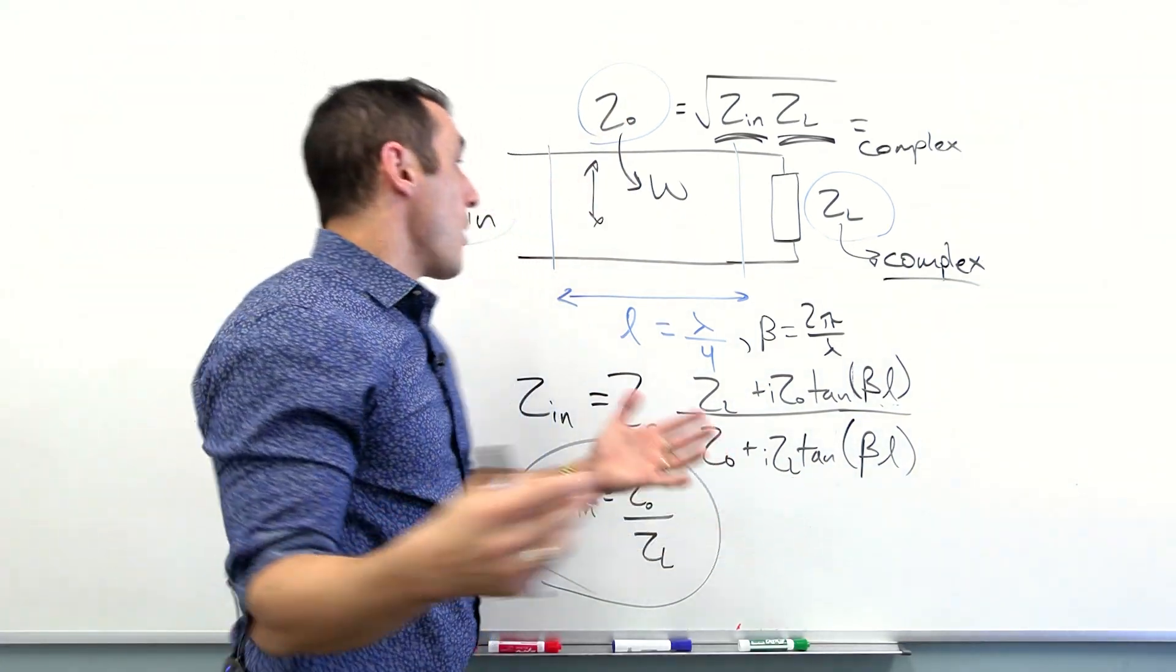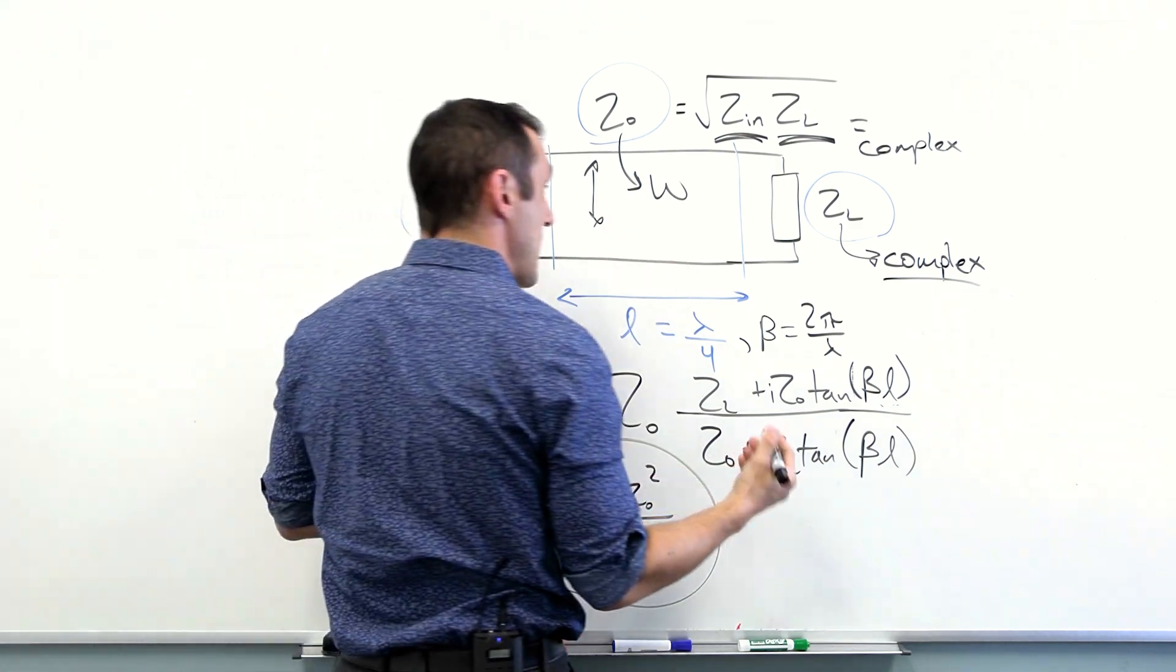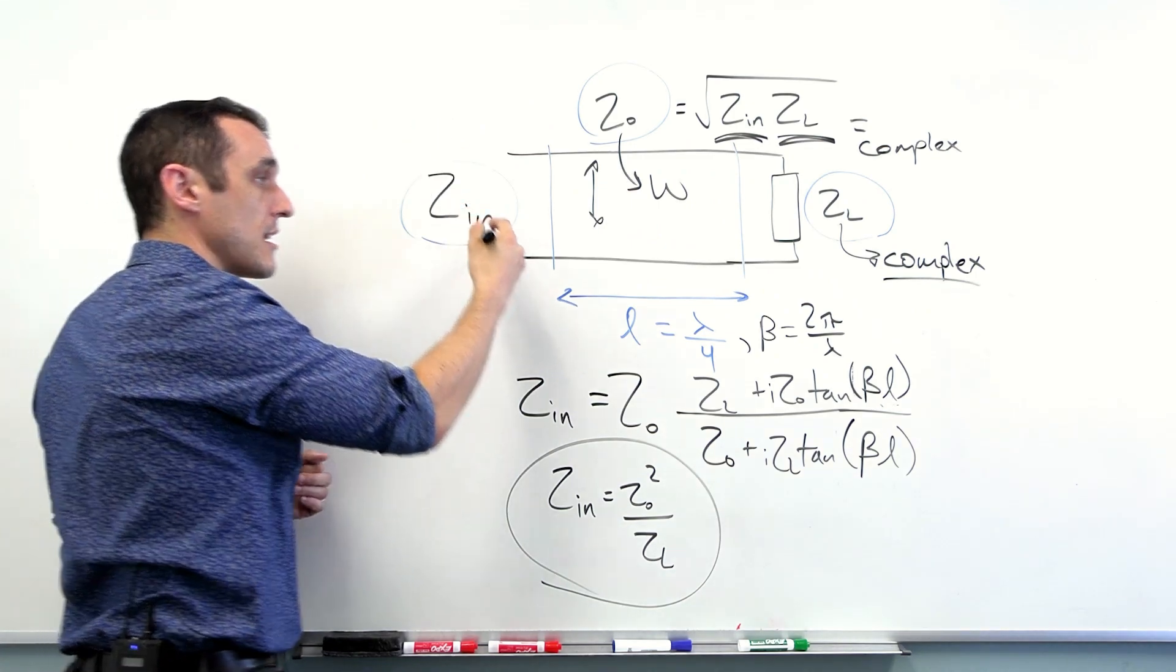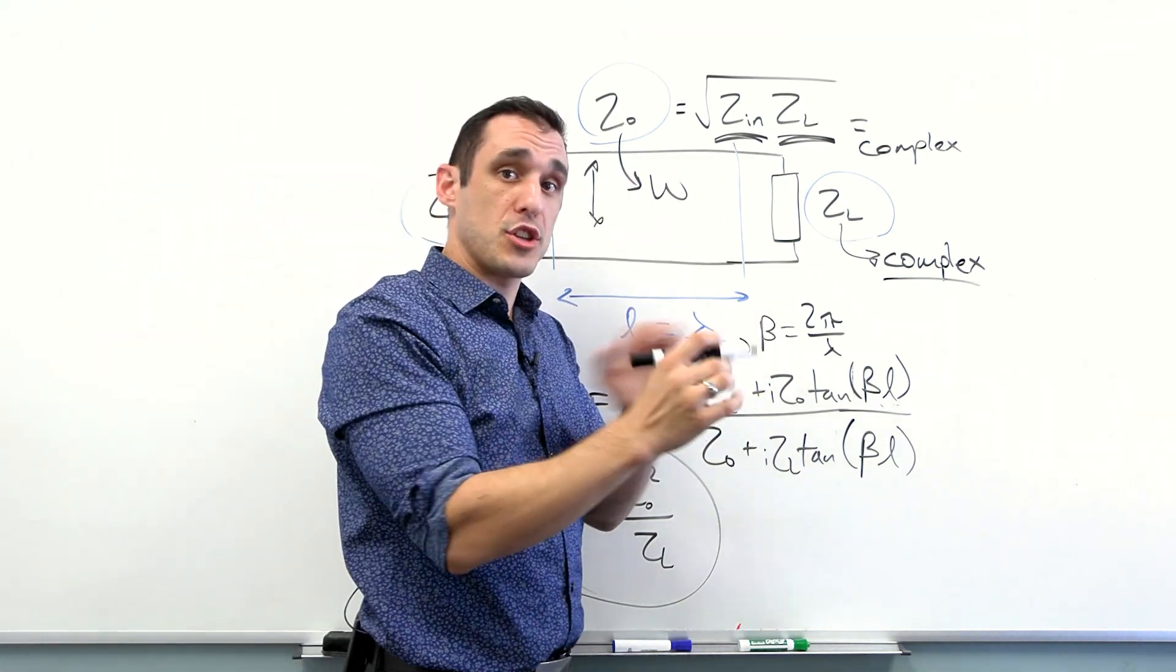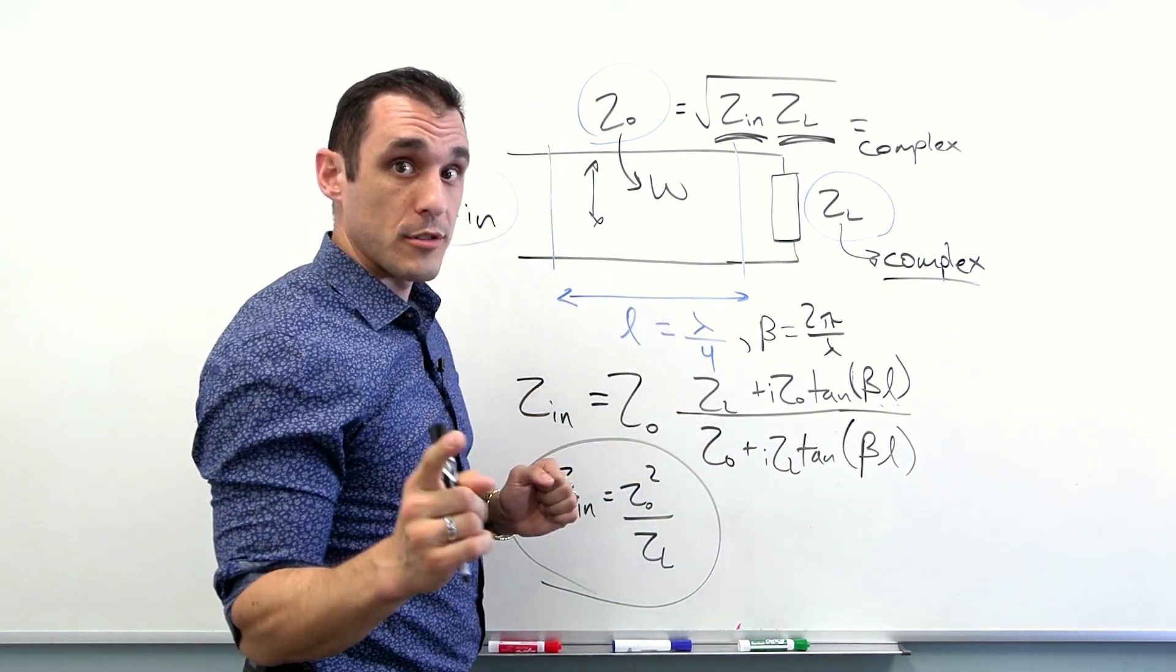Remember, if this is a complex number and this is a real number, let's say we're matching to 50 ohms, once we take that square root, we're going to get another complex number. And that complex number is going to be very hard to design to by just plugging in a width for your transmission line that gives you a purely real valued impedance. So what do we do? We have to put another section of transmission line that can then match this to a real input impedance on this side.